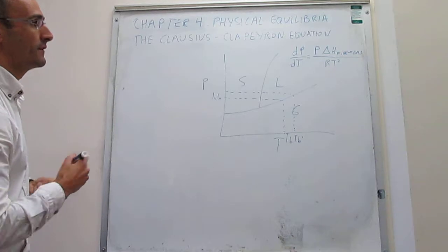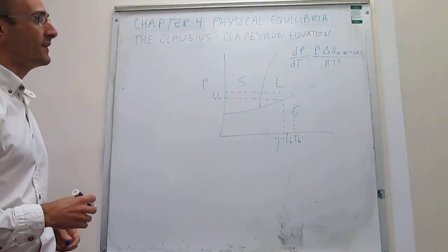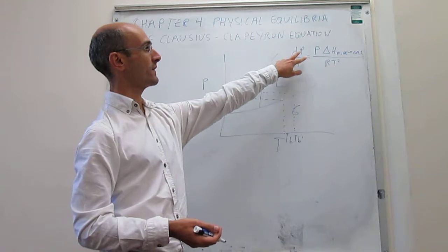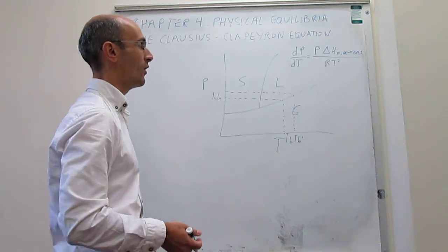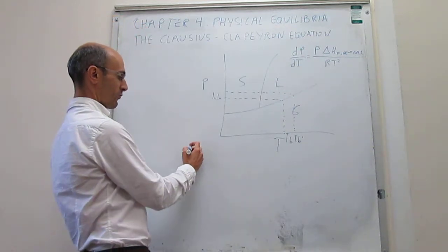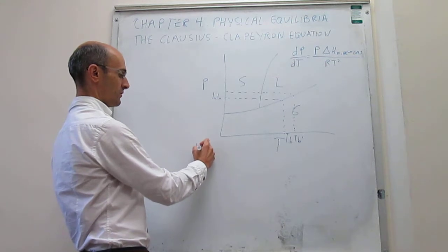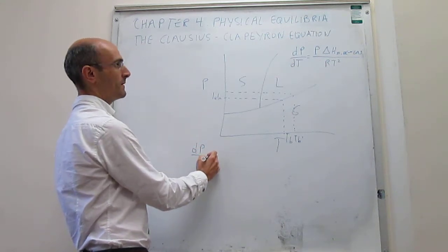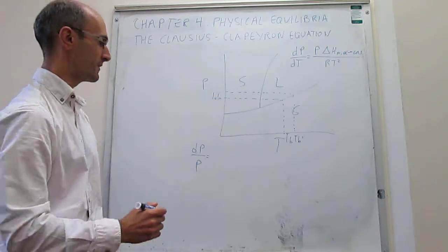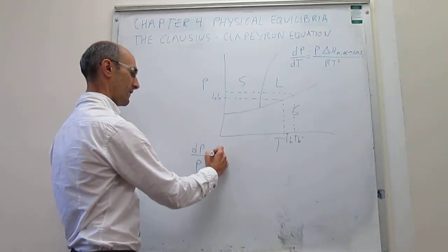The first thing we do is take the Clausius-Clapeyron equation and consolidate terms so they depend on the same variable. We group the pressures to the left-hand side of the expression, getting dP/P, and then temperatures to the right-hand side, getting ΔH of the phase transition